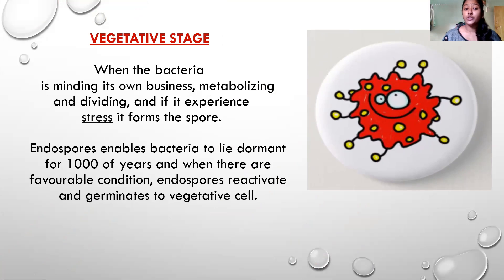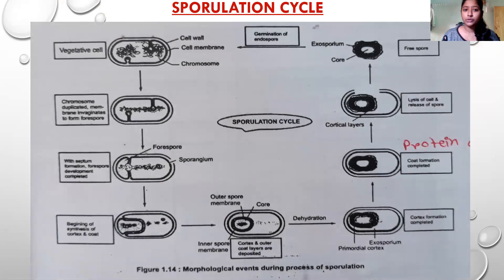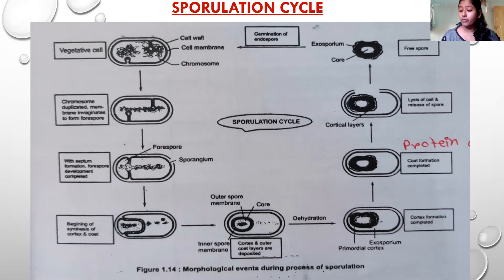The most important point is that endospores enable bacteria to lie dormant for thousands of years — a very long-lasting period. When favorable conditions return — when bacteria get proper nutrition for their growth — the spore gets reactivated and germinates back into vegetative cells. In the sporulation cycle, first you can see the vegetative cell: when there is an unfavorable condition and bacteria feel stressed, the vegetative cell decides to form a spore. Once that decision is made and spore formation begins, the DNA starts to replicate and becomes double to enter the spore.